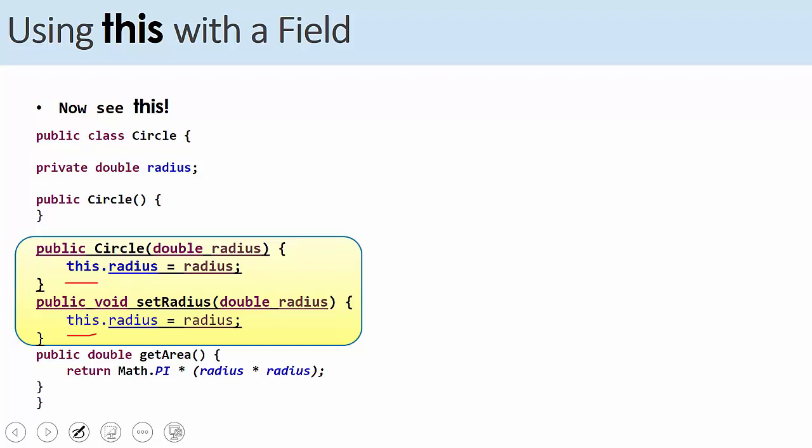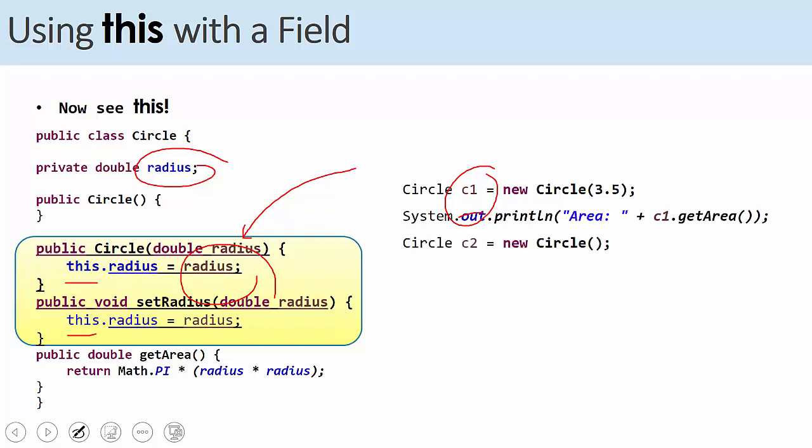When you say this, remember this means the object itself. The current object. Like when you call the object now, circle c1 equals new circle. This means c1. c1 radius is this instance variable. So now there is a way to differentiate the left one, which is the instance variable. Why? Because we use this with it. And now radius here is the parameter of the constructor. So if you run this code, you will get the right result.